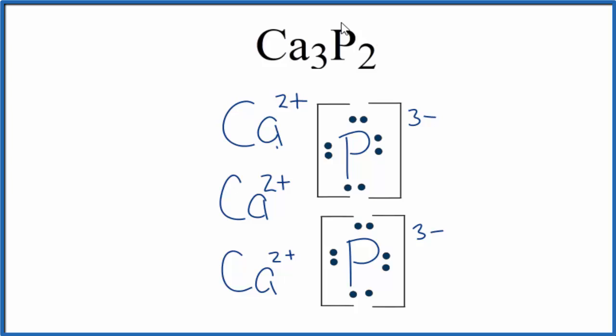Note that if we had solid calcium phosphide, a sample of calcium phosphide, it would be a crystal. So this formula unit here, we'd have a number of these in a repeating pattern. That's our crystal. But this is useful to see how the electrons were transferred from the calcium atoms to the phosphorus, and why we need three calcium atoms and two phosphorus atoms.